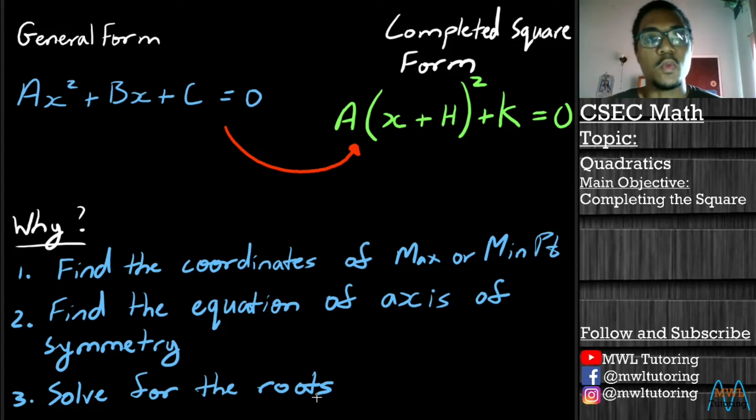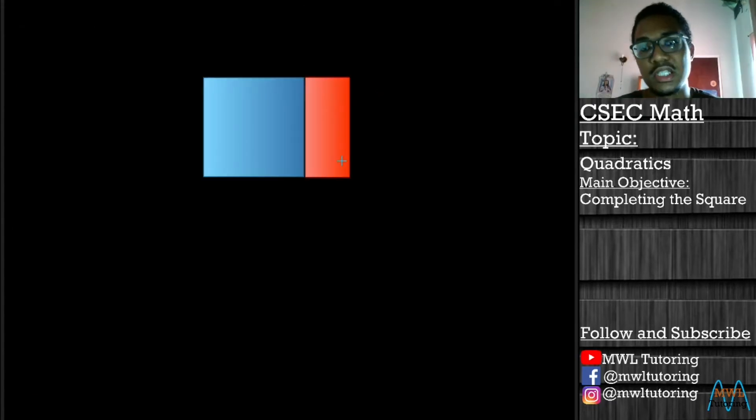And to do that, I'm going to jump onto a new page here. And right now you're seeing on your screen a blue square and a red rectangle. And what we're going to do is we're going to use a visual representation to explain how to complete the square. This is just explaining how we do it. We'll get down to exactly how we do it with the numbers and everything later on, but this is going to explain the process.